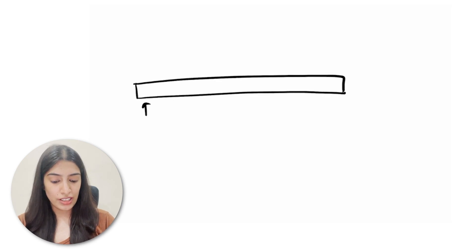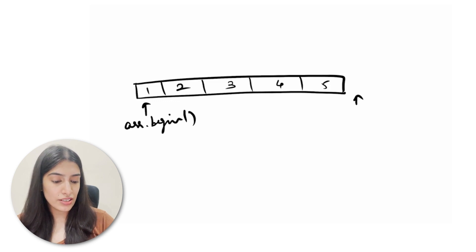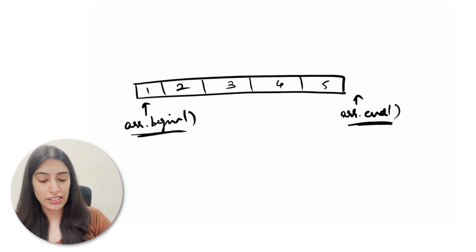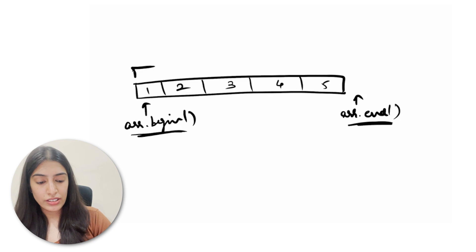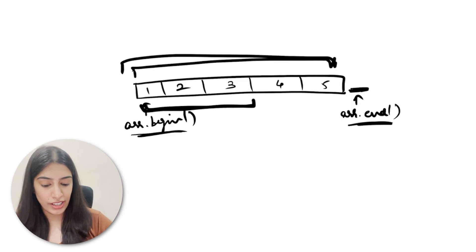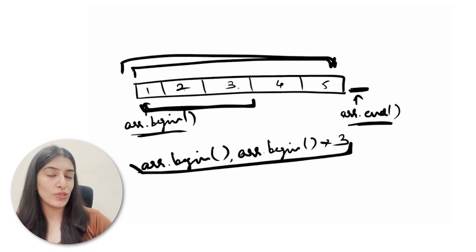Let me make a diagram to show you. If this is our array with elements one through five, this is array.begin and this is array.end. When you pass first and last, you pass array.begin and array.end — the STL is going to look for the number in those elements, not including array.end. If you want to search from a subset, say array.begin to array.begin plus three, you search in just those elements.